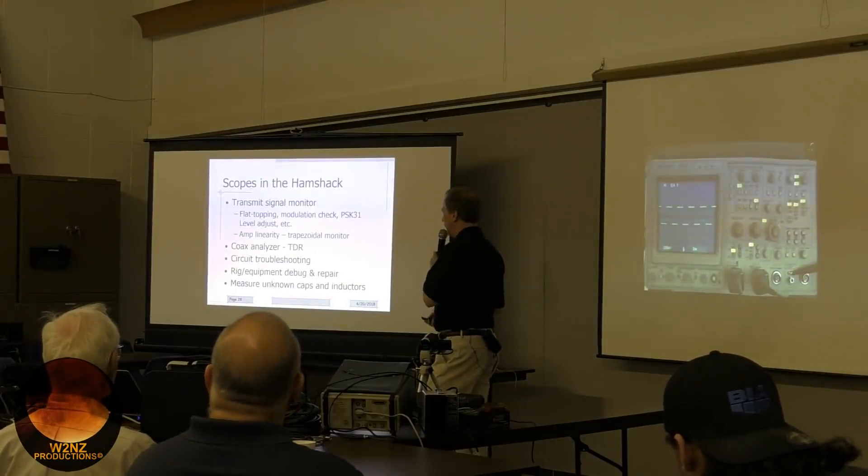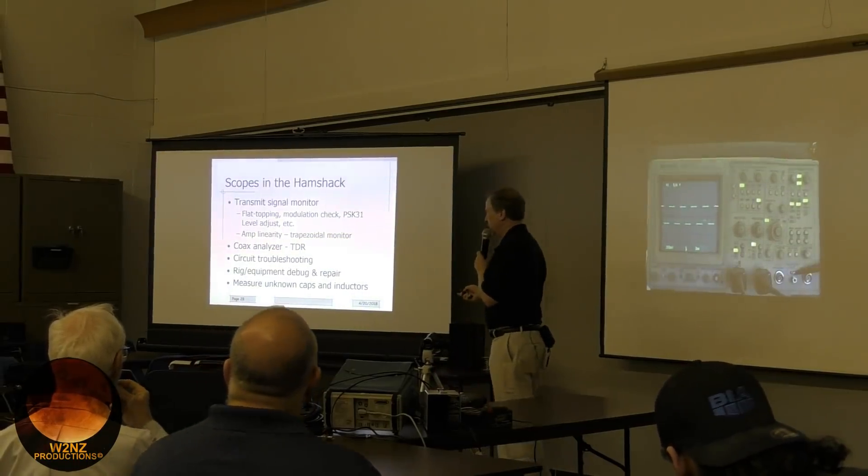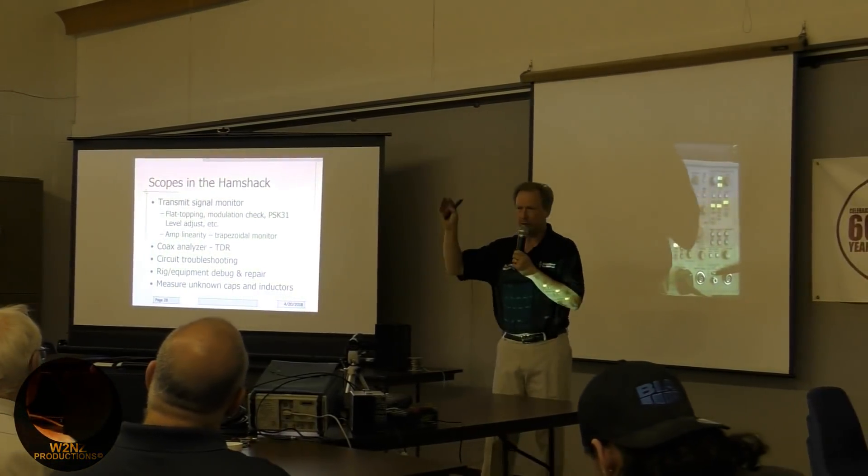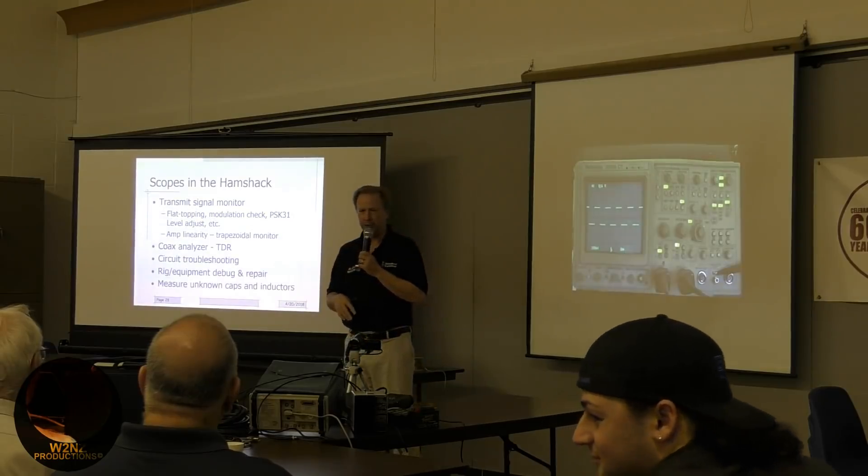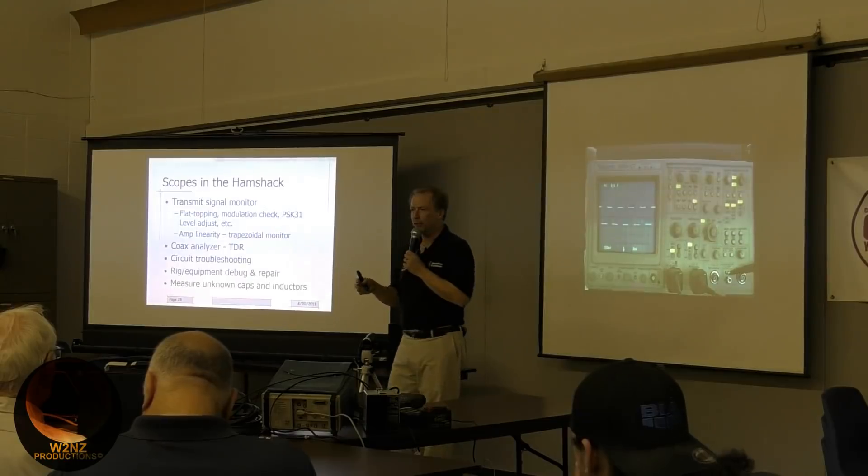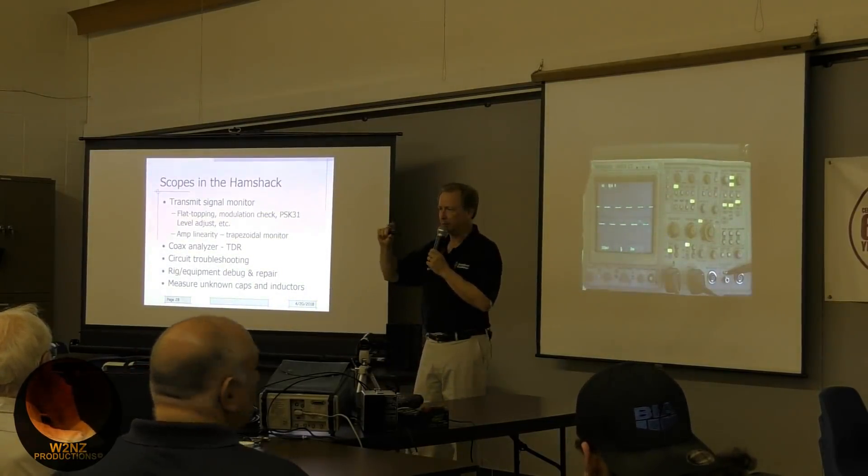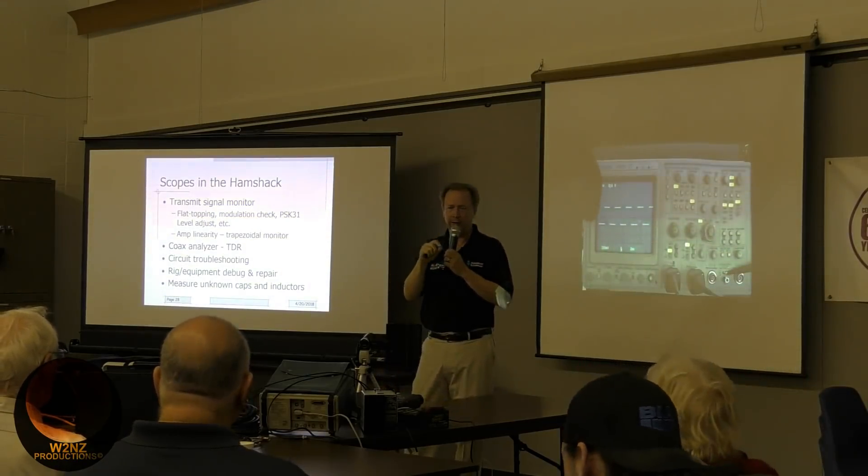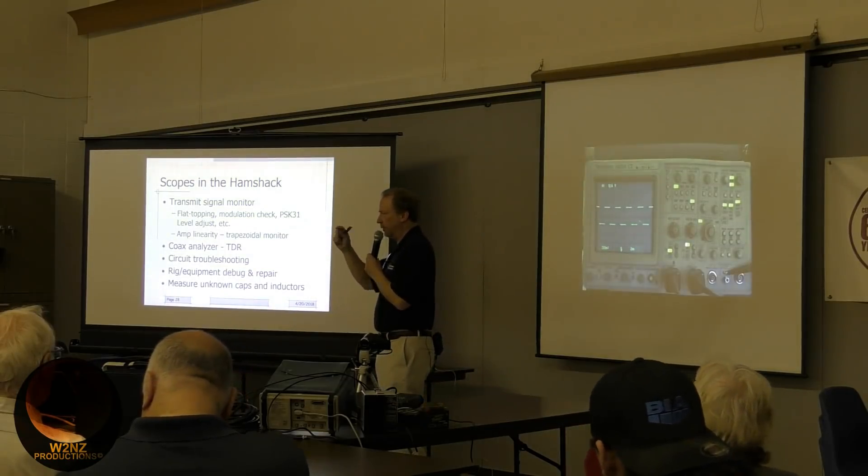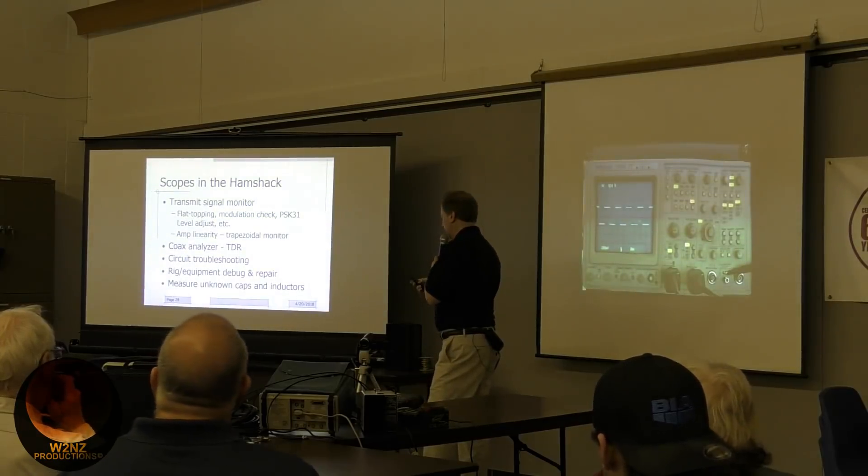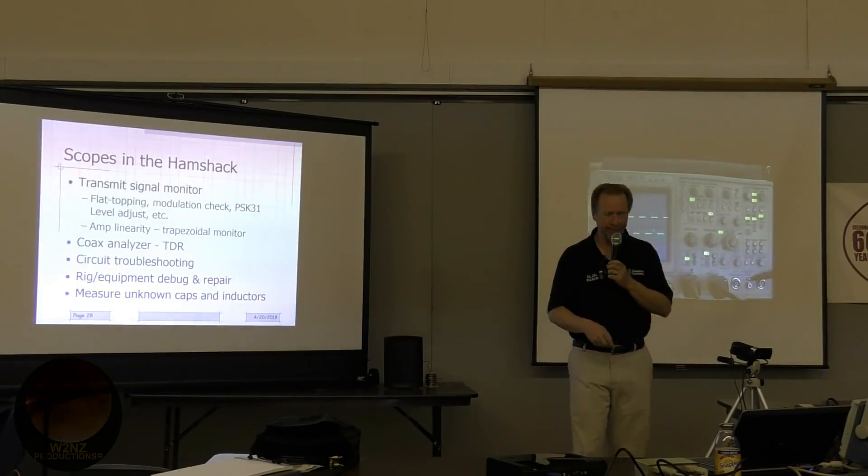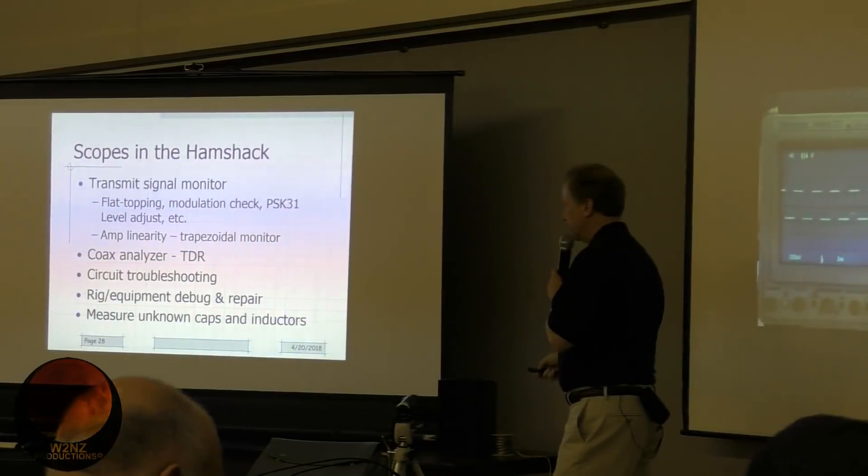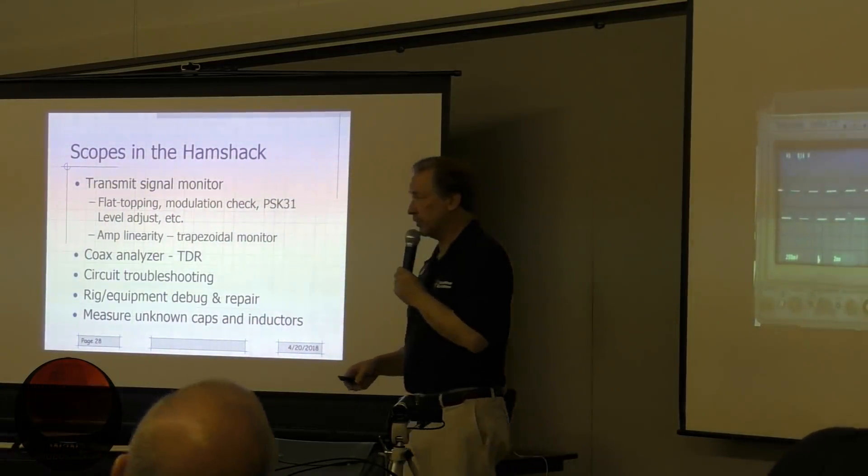Let's take a look at a couple of examples of using a scope in a ham shack. One example is a transmit signal monitor. How many have got an old station monitor in their shack like an old Heathkit, Yaesu SM220, or Kenwood? It could be really handy for looking at transmitted flat topping or if there's something weird going on with the RF signal. Even looking at amplifier linearity with trapezoidal measurements. Also, if you do things like PSK31, looking at the RF envelope is a better way of actually adjusting the drive level than looking at the meters on your radio. We'll also do an example of time domain reflectometry on a piece of coax to measure its length, and measuring unknown capacitors and resistors.